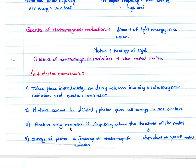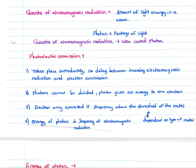An electron is only emitted if the frequency is above the threshold frequency of the metal, which is dependent on the type of metal. The energy of the photon is directly proportional to the frequency of electromagnetic radiation.